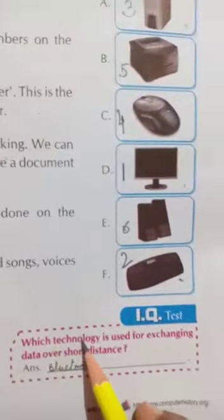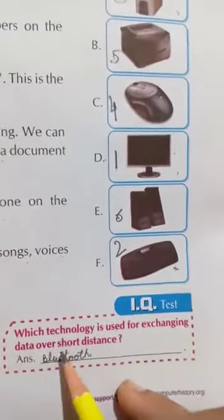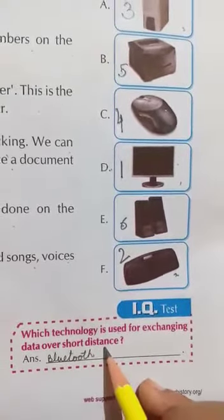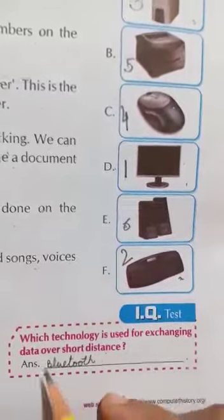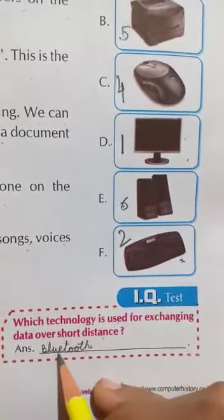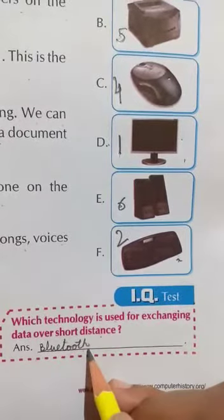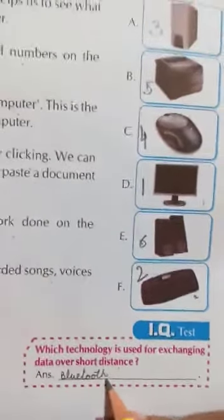Now come to the next point. IQ test: Which technology is used for exchanging data over short distance? Bluetooth. You will write here: B-L-U-E-T-O-O-T-H. Bluetooth. Okay children, do it yourself at your home. Thank you.